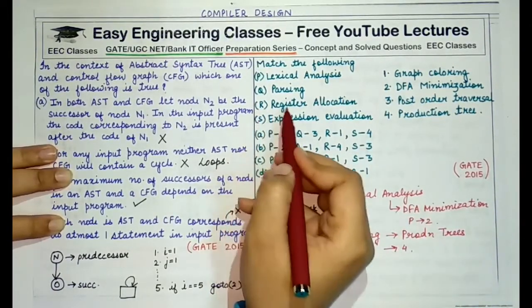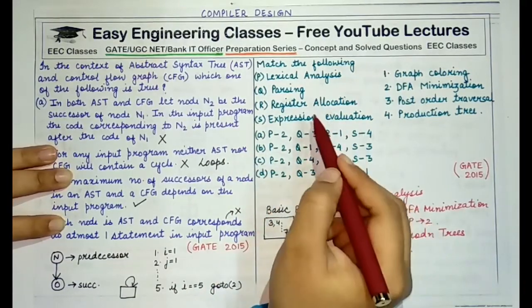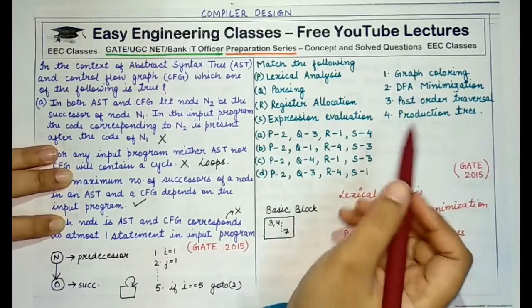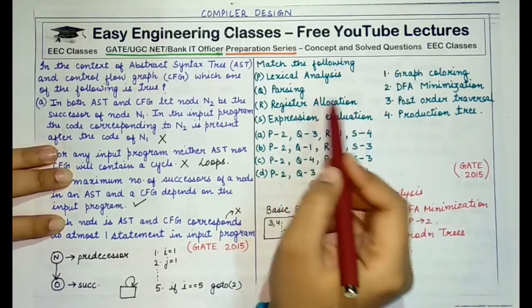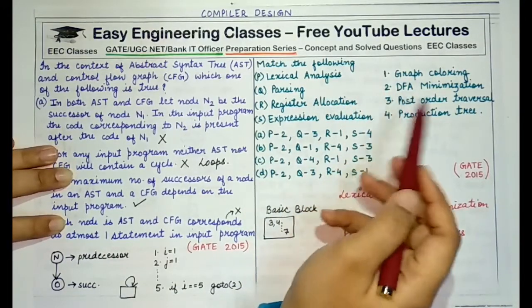Now coming to register allocation. Register allocation is modeled by graph coloring. It is a phenomena that directly relates to graph coloring. So option R of register allocation maps to option 1, that is graph coloring.